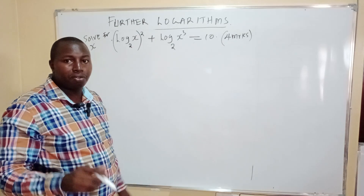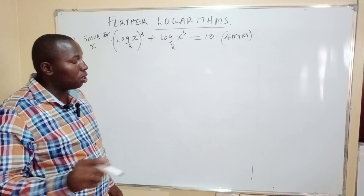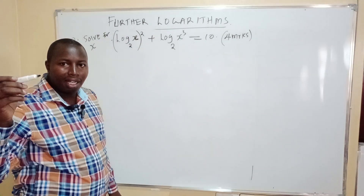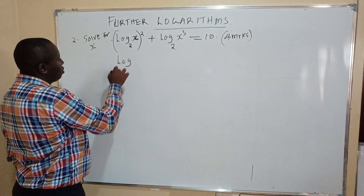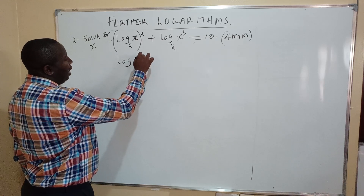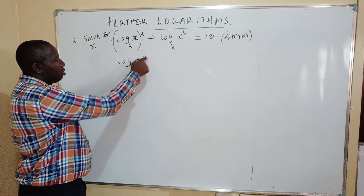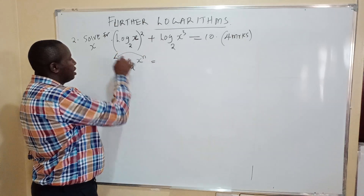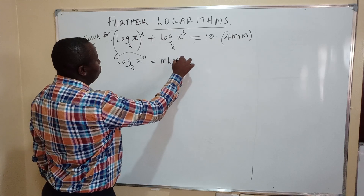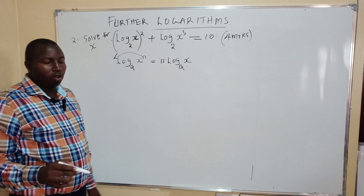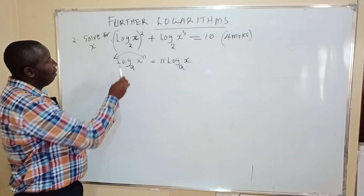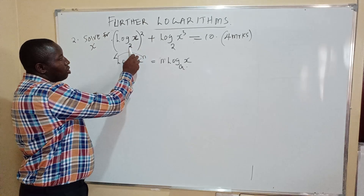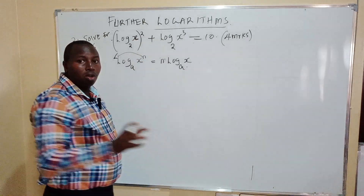This is a question where most students make a lot of mistakes. The examiner is testing whether the student understands this question. Remember the rules of logarithms: we have log of x to the power n, to base a. The power rule says you bring the power down, so you get n times log of x to the base of a. But the examiner has not given log of x squared to base 2 — he has given log of x to base 2, with everything squared. So you cannot apply that law of logarithms.